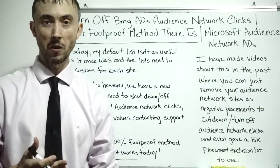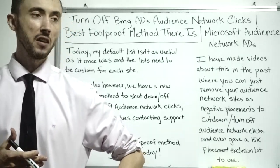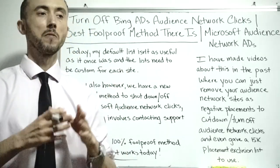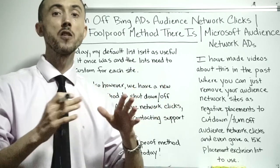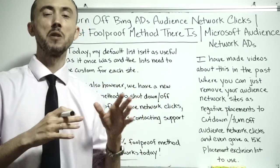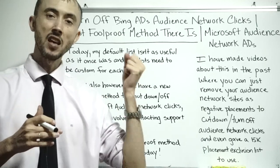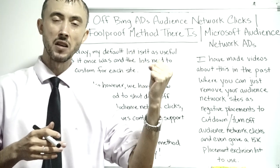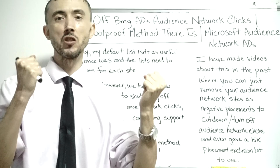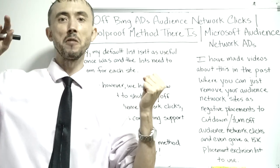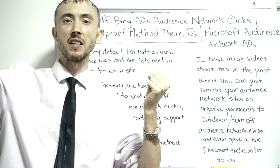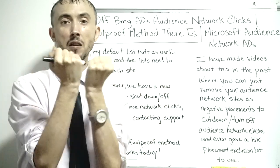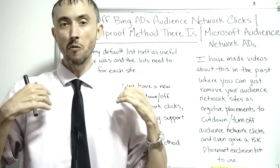It's similar to Google Display Network and how that works. Microsoft, which obviously runs Bing, has made it harder and harder to shut off these audience network clicks because they know their customer base doesn't want them. They take something people want — Bing.com search ad space — and mix in these network clicks where they're getting a cut of every ad placed on other websites outside Bing.com.